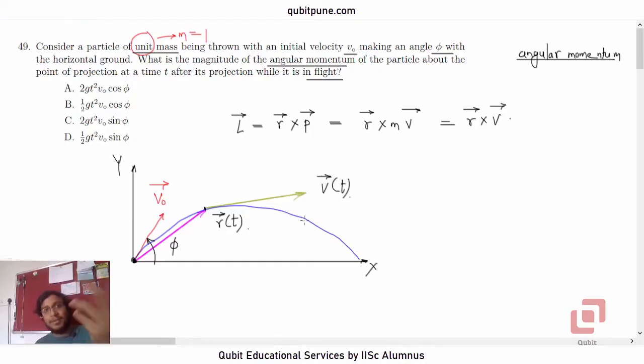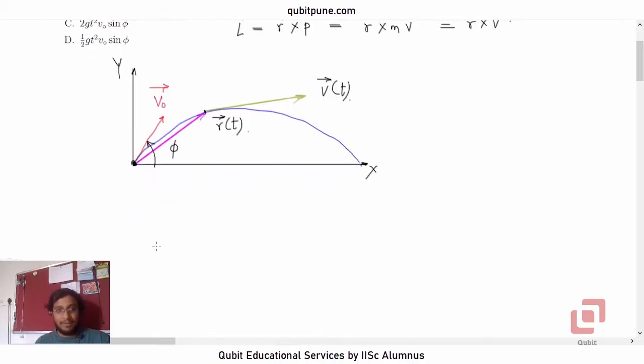Because momentum is the same as velocity in magnitude in this case, because of mass being one, we have to basically find R bar cross V bar. Now, the thing is, we know that if the velocity V bar of t is to be resolved into two of its components,